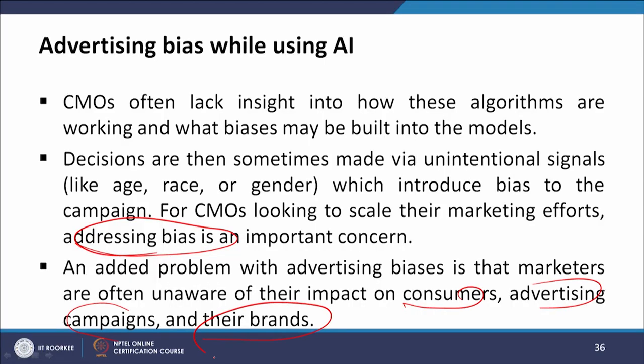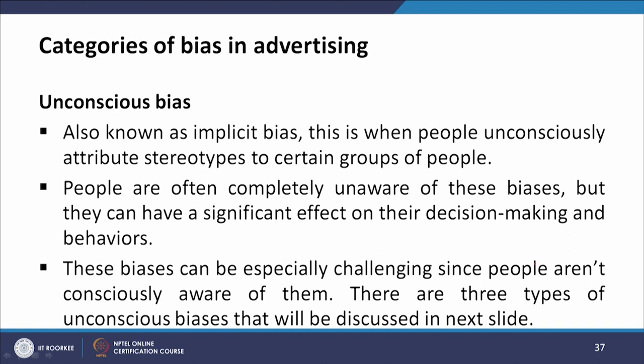An added problem with advertising biases is that marketers are often unaware of the impact on consumers, advertisers, campaigns, and their brands. Let us look at the categories of bias in advertising. The first is unconscious bias, also known as implicit bias — when people unconsciously attribute stereotypes to certain groups of people. People are often completely unaware of these biases, but they can have a significant effect on decision making and behaviours. These biases can be especially challenging since people are not consciously aware of them. There are three types of unconscious biases.